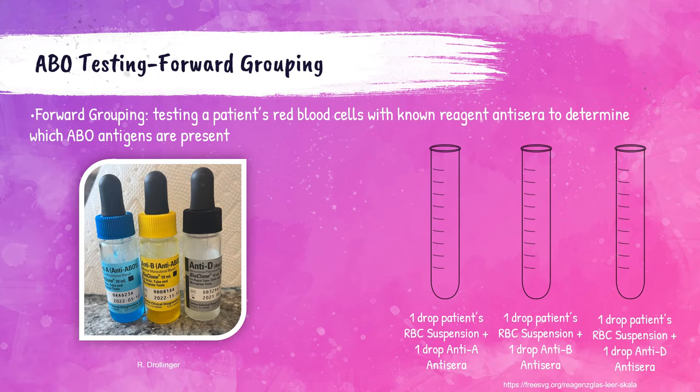The anti-D is used to determine a patient's Rh status. Anti-D is part of the Rh blood group system, which I will discuss in a later presentation. If a patient is Rh positive, there will be agglutination in the third tube. If there is no agglutination in a tube, this means the patient is lacking that specific antigen.